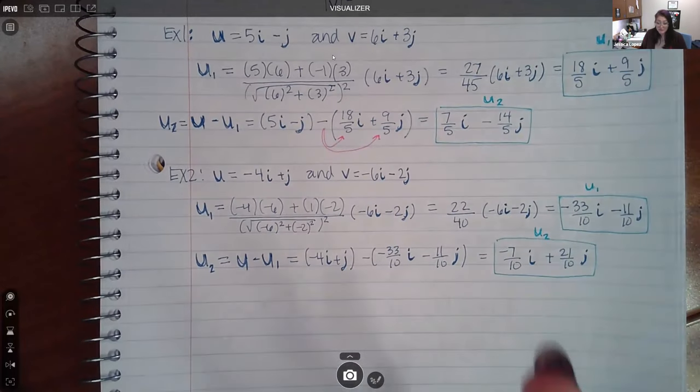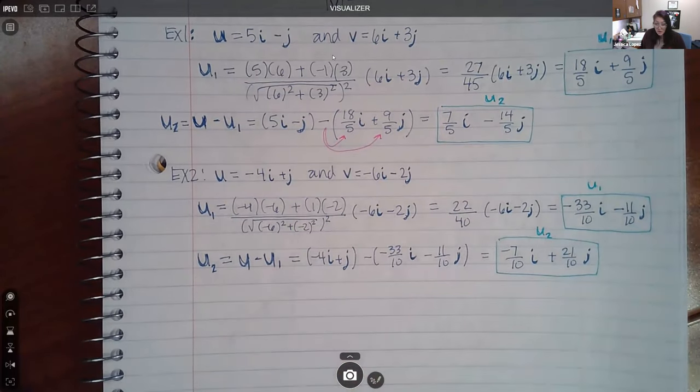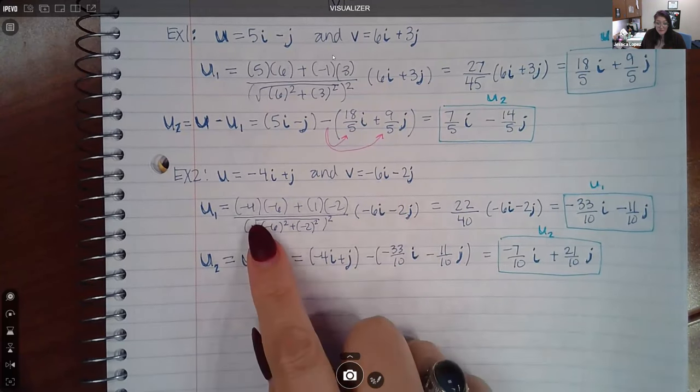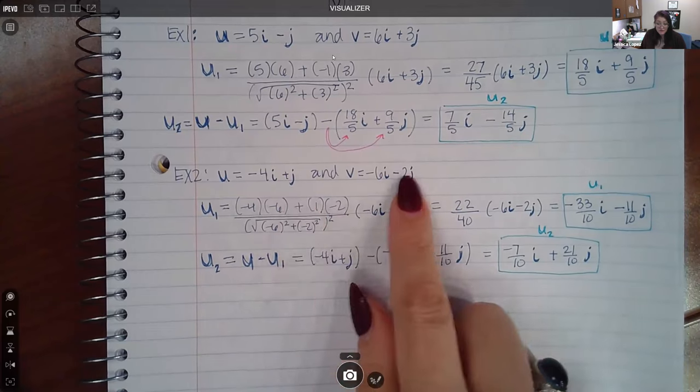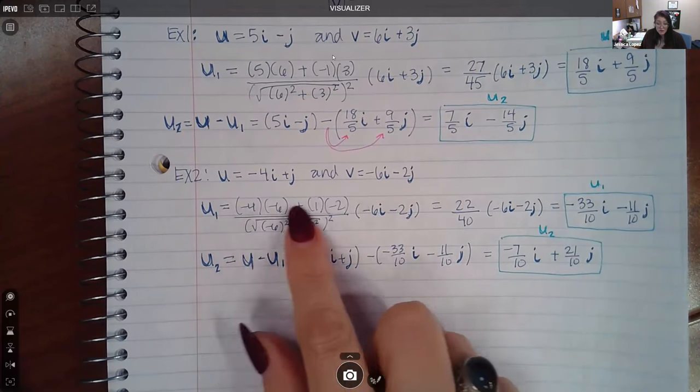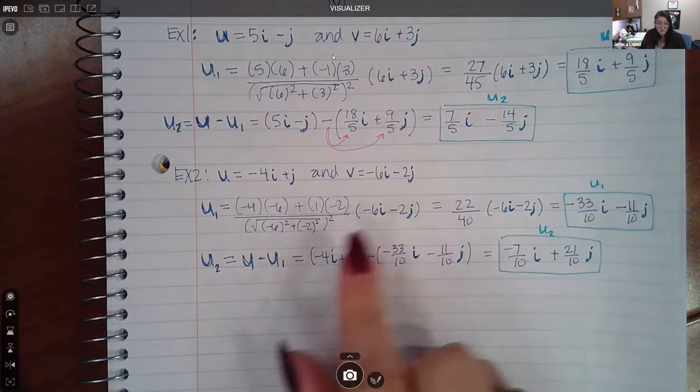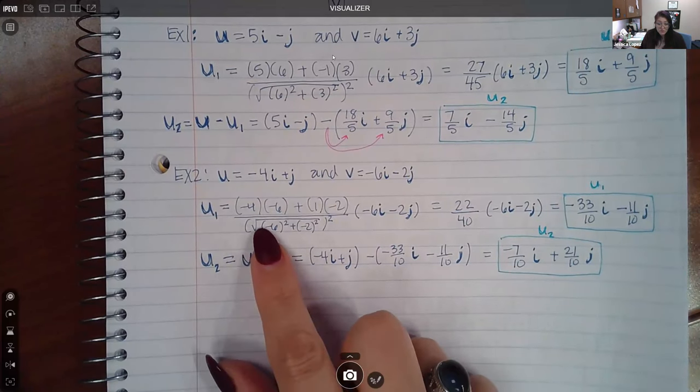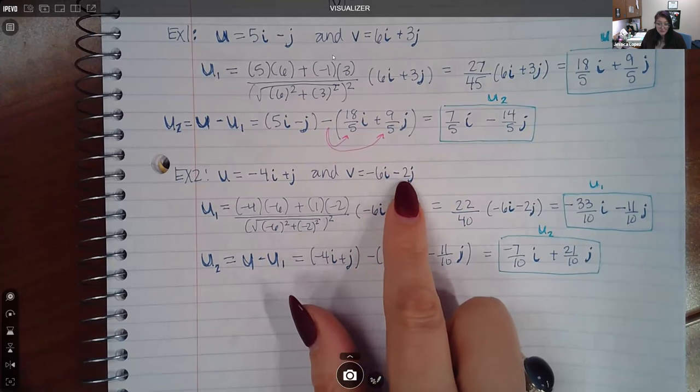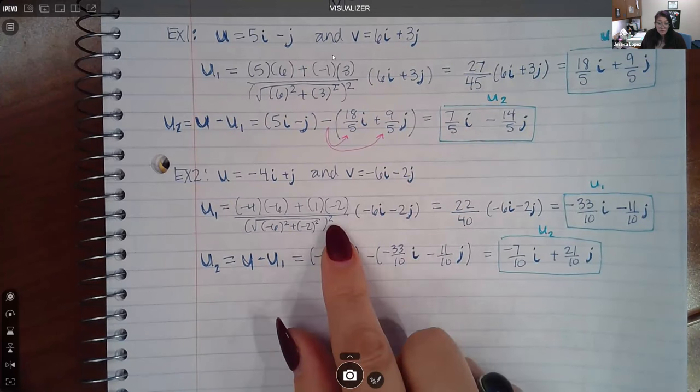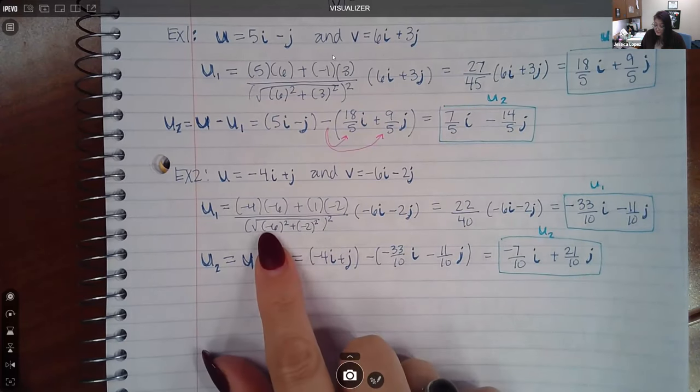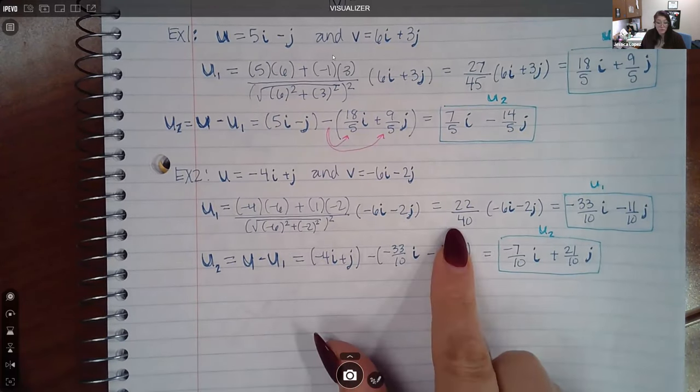Example 2 is very similar, just two different vectors. So first is going to be the dot product in the numerator. So negative 4 times negative 6, and then positive 1 times negative 2. This computation resulted in 22. Then you're going to take the magnitude of V, which is the square root of negative 6 squared plus negative 2 squared, squared. So the square is going to cancel the square root. So you have 36 plus 4, which is 40.